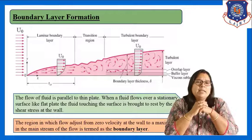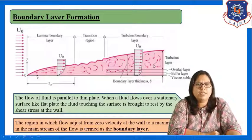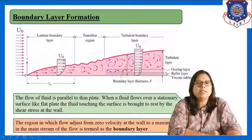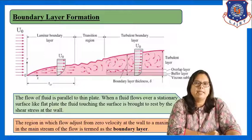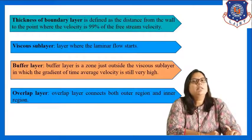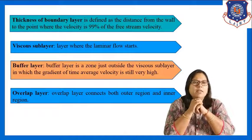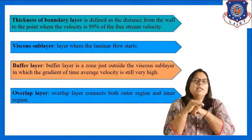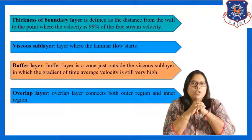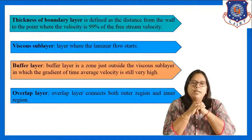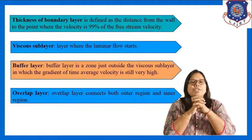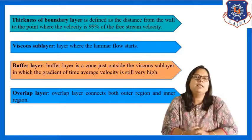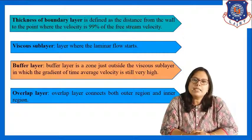The boundary layer is divided into three layers, as shown in the figure. At the bottom is the viscous sub-layer, above that is the buffer layer, and above that is the overlap layer. The thickness of the boundary layer is defined as the distance from the wall to the point where the velocity is 99% of the free stream velocity.